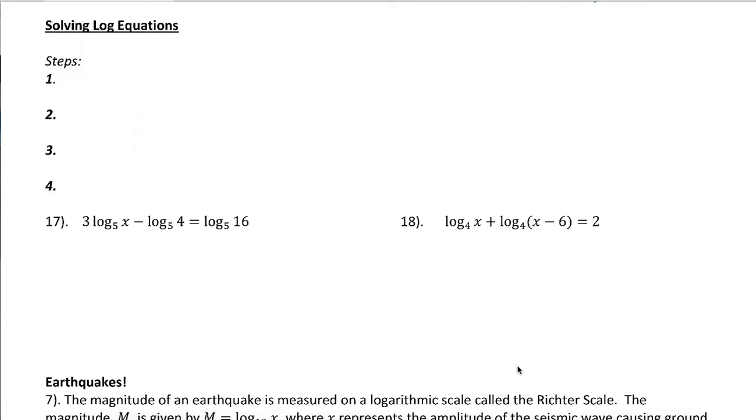So the easier way to go, what we're going to do instead, is first, always condense both sides. Condense all logs. So I'm going to take 3 times log base 5 of x minus log base 5 of 4, and I'm going to condense that. You can do it in two steps or in one step if you feel comfortable. Log base 5 of x cubed minus log base 5 of 4. I don't really have anything to do with log base 5 of 16. It's already by itself anyway.